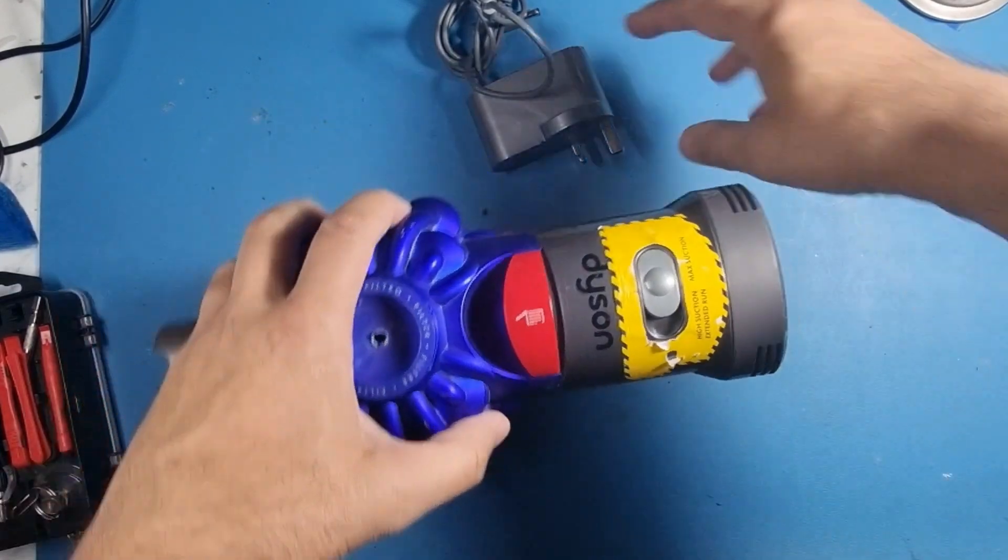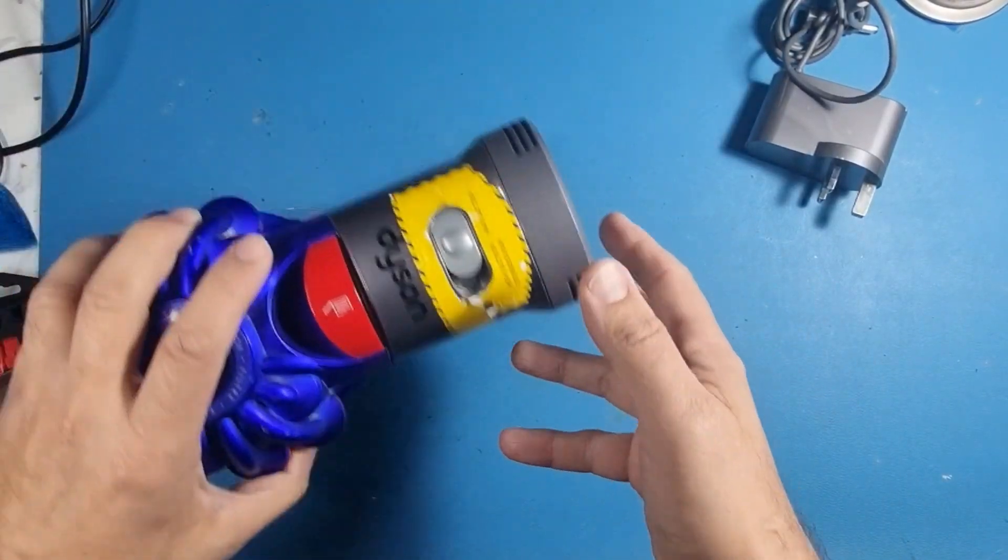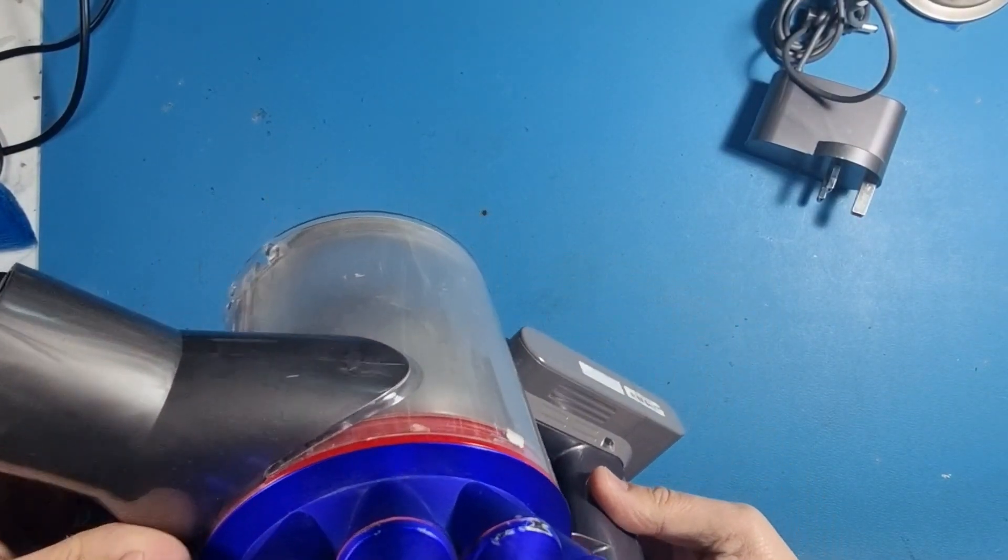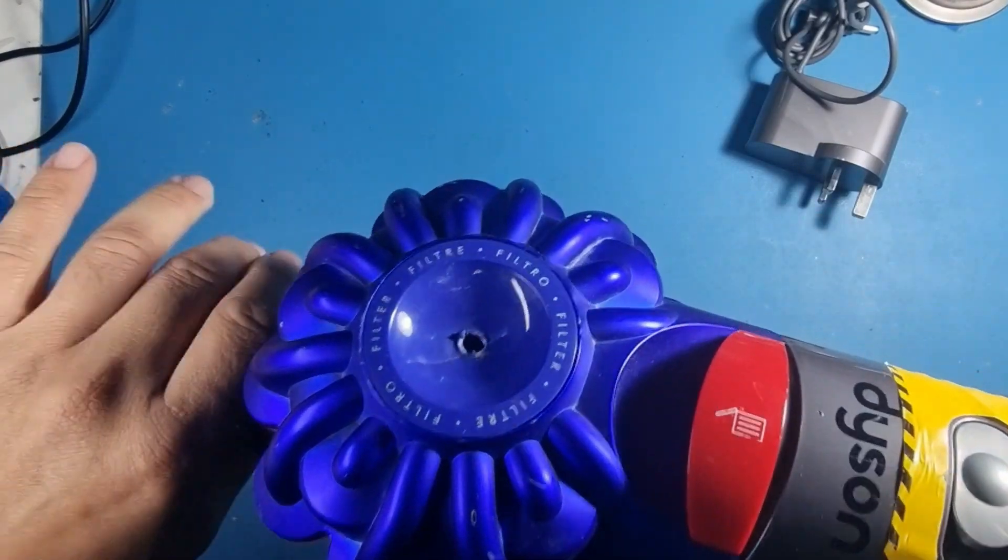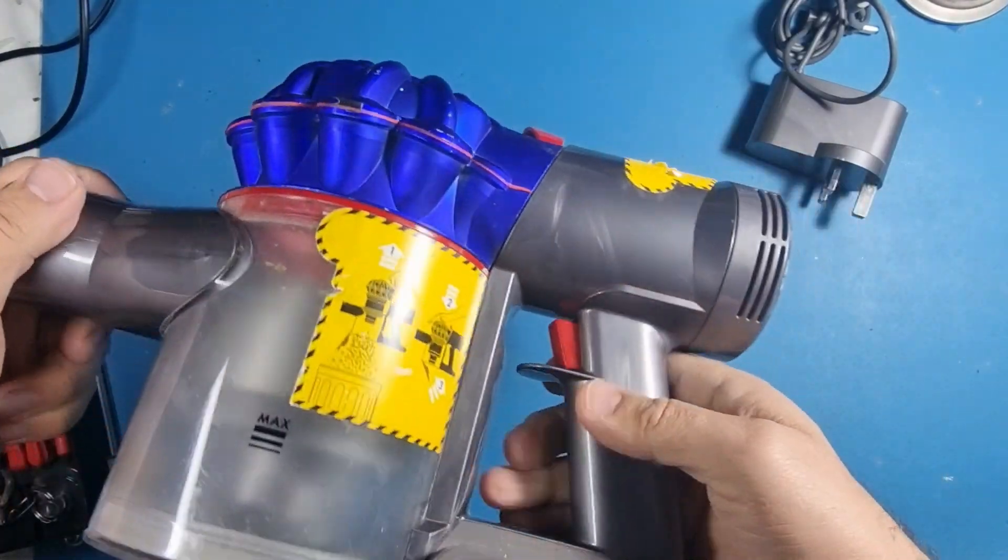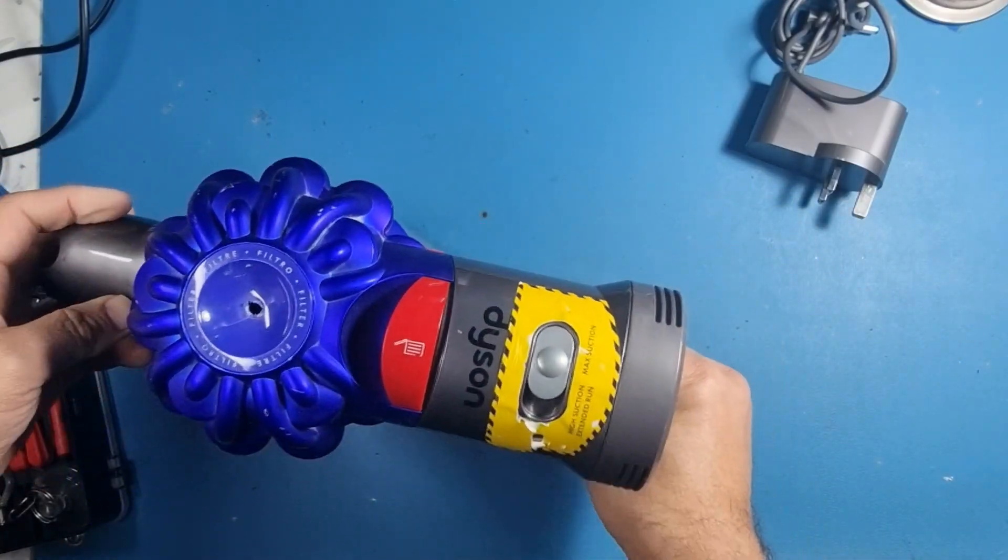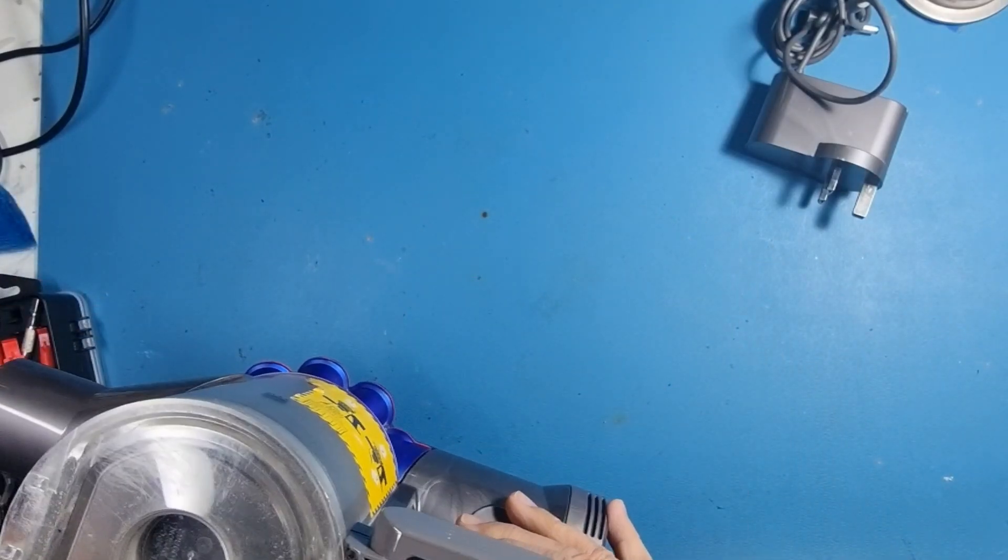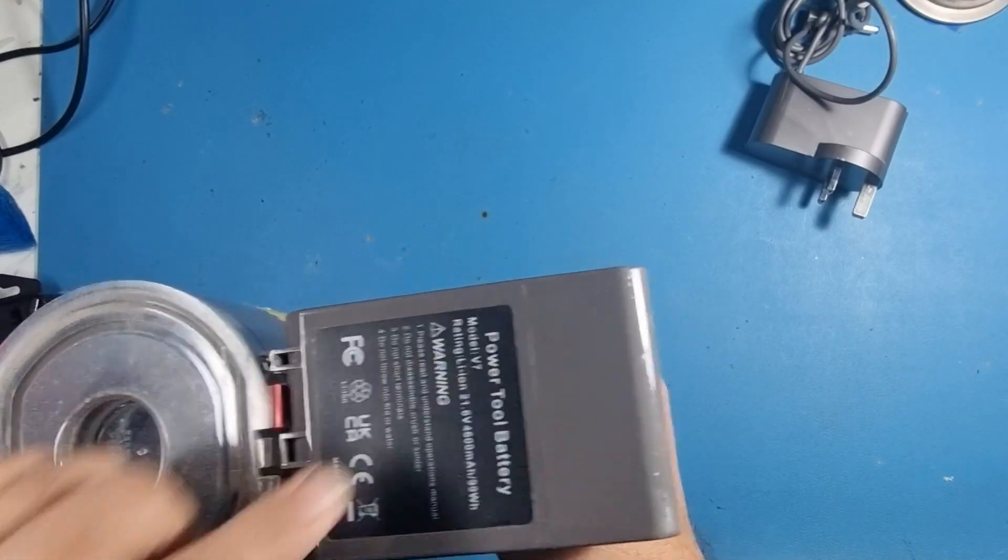Hi guys, welcome to another video. Today we've got a Dyson vacuum cleaner. I haven't got the other end because usually on the main pipe that's where the model of the device is, but I think it was something seven. That doesn't really matter at this point. Oh, it's a V7, there you go. Dyson V7.